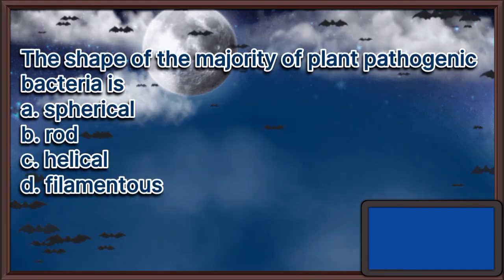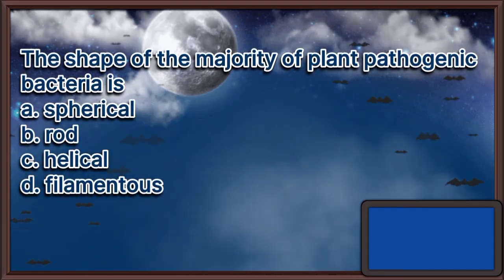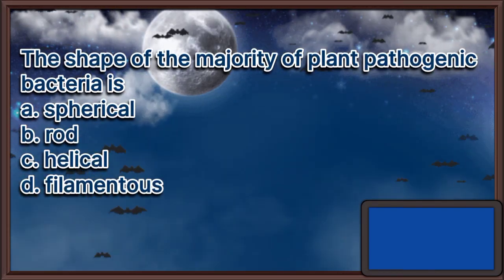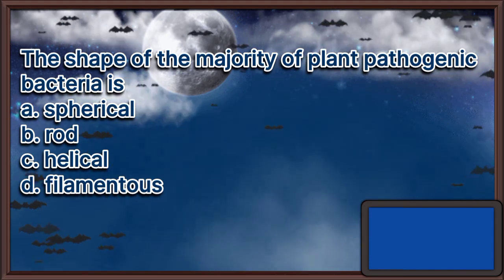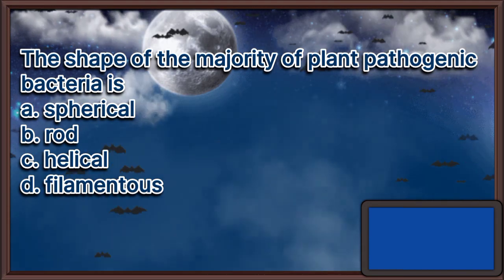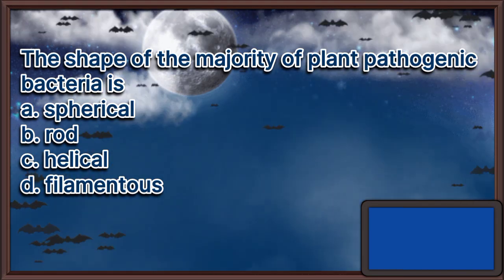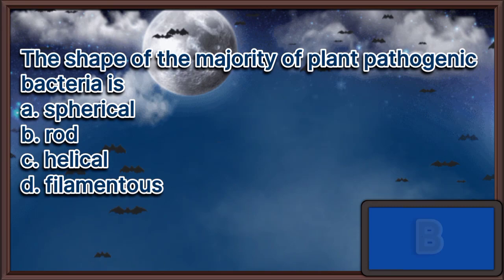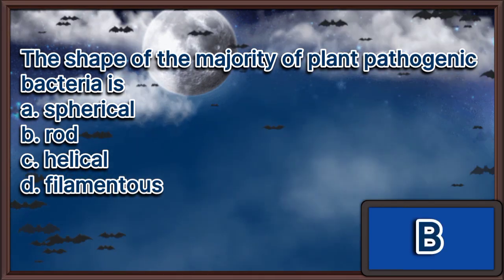The shape of the majority of plant pathogenic bacteria is: A. Spherical. B. Rod. C. Helical. D. Filamentous. The answer is letter B.